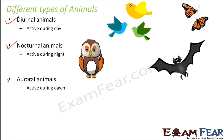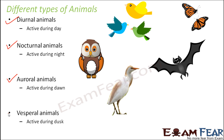Auroral animals are those which are active during dawn — that is the early morning time. An example is the babalcus, which is a bird, as you can see on the screen. Vesperal animals are those which are active during dusk, that is during the evening at sunset — an example is the rabbit. Different animals are more active during a specific part of the day.